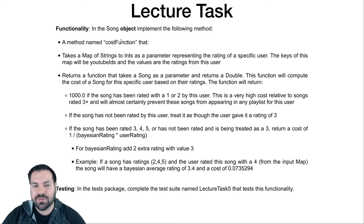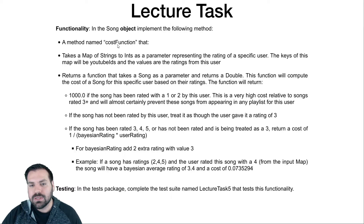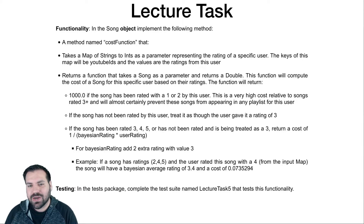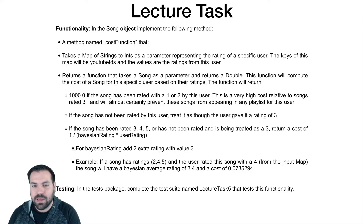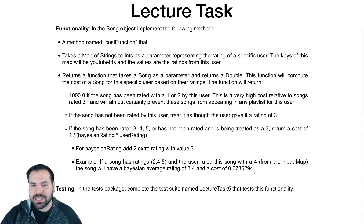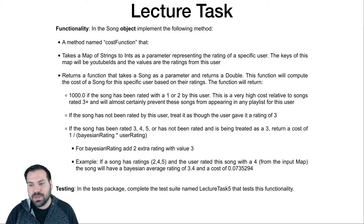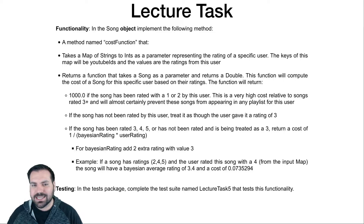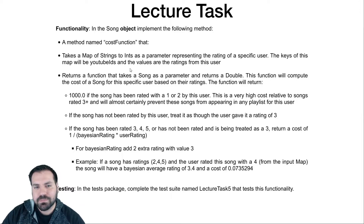For this lecture task, you're going to write a cost function for the song. We want a way to determine how good or bad a song is according to some specific equation. We're going to assign a cost where a lower cost means a better song that we might want to add into our playlist. This will feed into the genetic algorithm. LT6 is writing a cost function for the playlist class; this cost function is going to find just single songs.